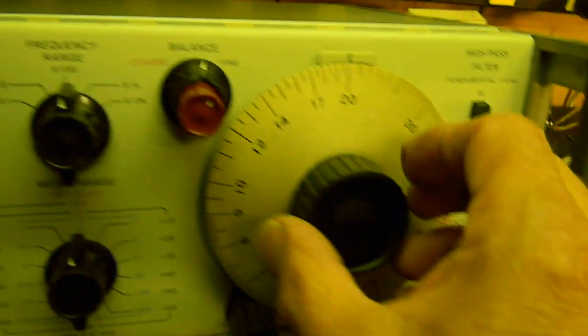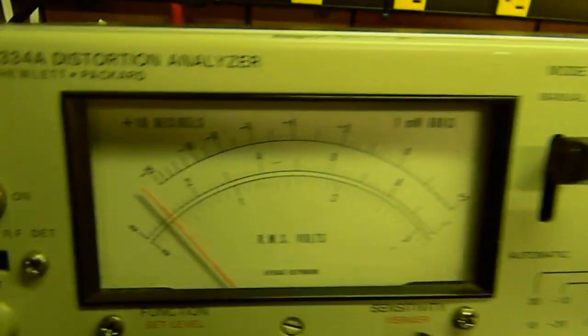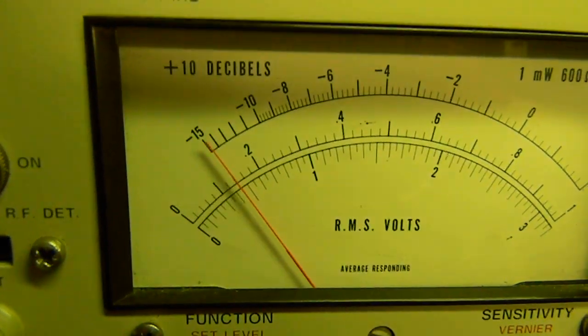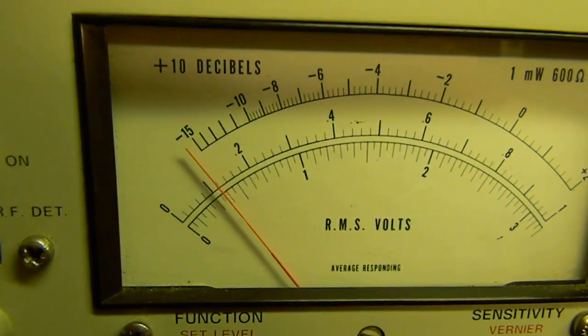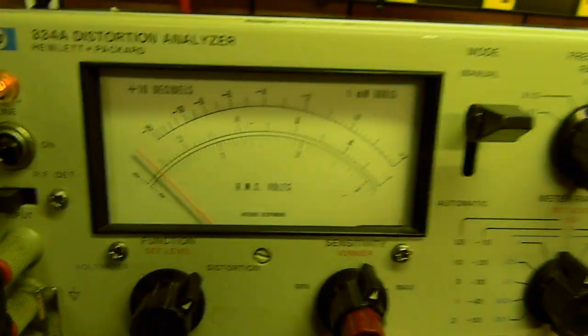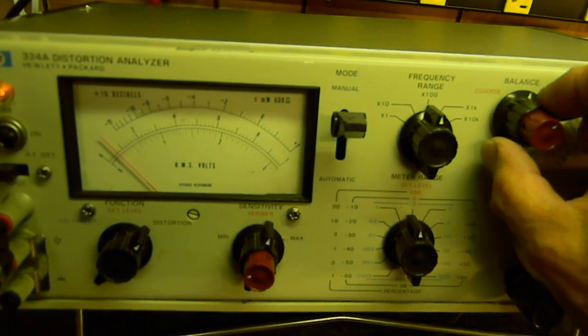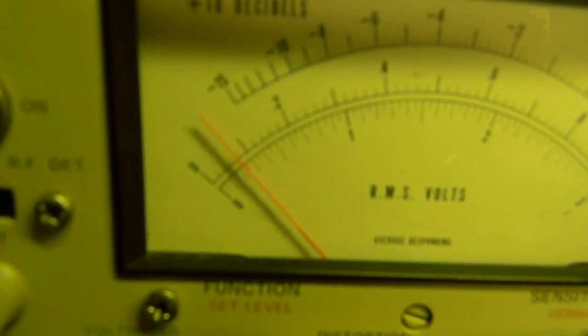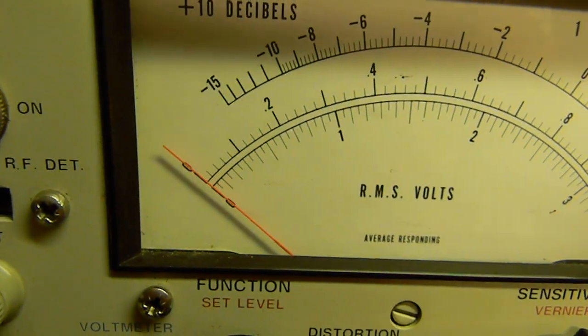What we're doing here is nulling the fundamental frequency. There we go, so there's 20 times 100, which is our 2 kilohertz. Then we take the balance and we do it again by turning this one - this was the coarse one, the outer one. So we turn the coarse, we get this as low as we can go again. Oh yeah, that's good. There we go, that's it.